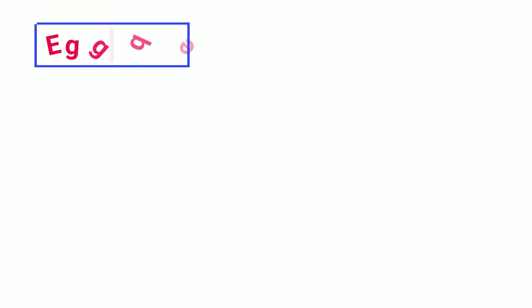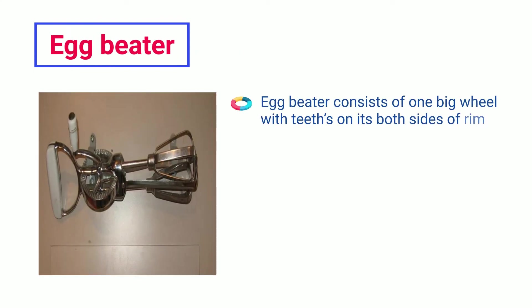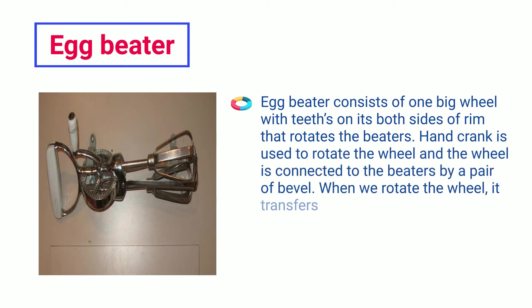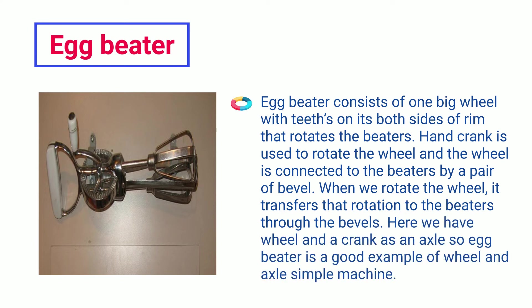Egg Beater. An egg beater consists of one big wheel with teeth on both sides of its rim that rotates the beaters. A hand crank is used to rotate the wheel, and the wheel is connected to the beaters by a pair of bevels. When we rotate the wheel, it transfers that rotation to the beaters through the bevels. Here we have a wheel and a crank as an axle, so an egg beater is a good example of a wheel and axle simple machine.